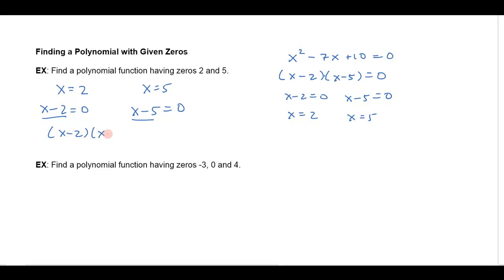so all I'm doing is just go in reverse, and notice that these have to be the factors then, x minus 2 times x minus 5 equals 0, that's going to be a polynomial that's going to have those zeros, and that's of course x squared minus 7x plus 10 equals 0, and so my polynomial is just x squared minus 7x plus 10, that's a polynomial that's going to have those zeros.